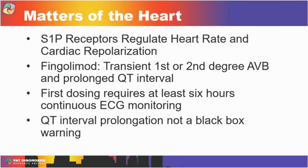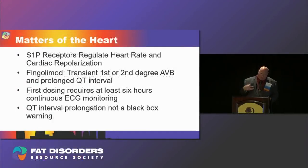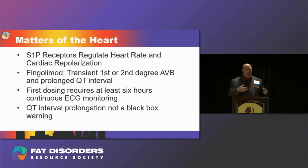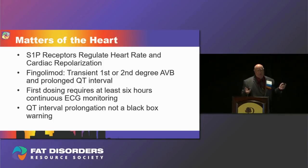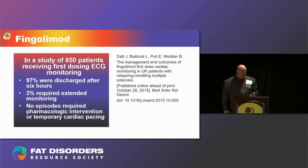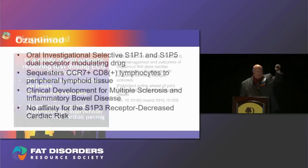There are cardiac considerations in using these drugs because sphingosine-1 phosphate receptors also help regulate heart rate and cardiac repolarization. In clinical development, fingolimod was found to cause some transient first and second degree atrioventricular blocks as well as mild prolongation of the QT interval. When this happens, it occurs at first administration, so the initial dose requires at least six hours of cardiac monitoring. The QT interval prolongation was not significant enough to warrant a black box warning.